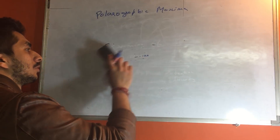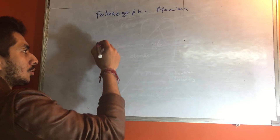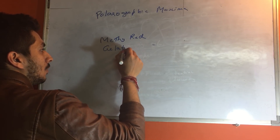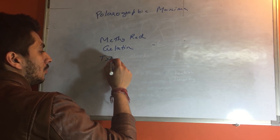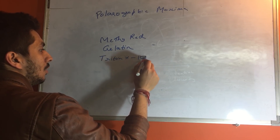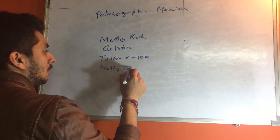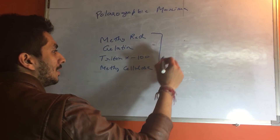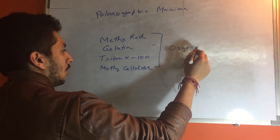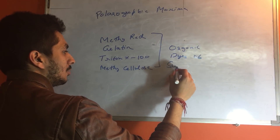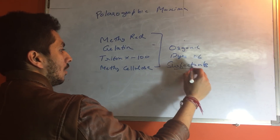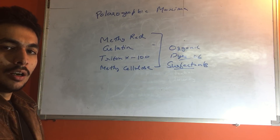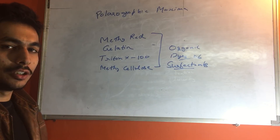To prevent polarographic maxima, we add a very tiny concentration of certain substances: methyl red, gelatin, Triton X-100, and methyl cellulose. These reagents are basically organic dyes or surfactants. By some mechanism, they help in producing regular shaped drops and proper streaming of mercury drops.